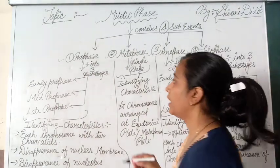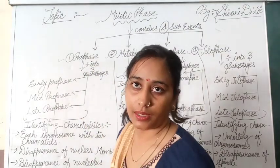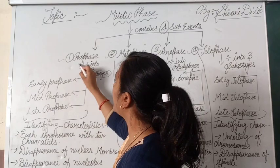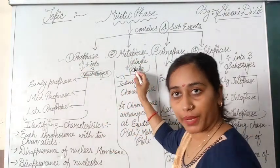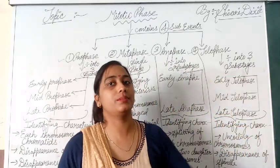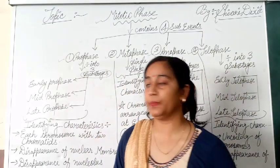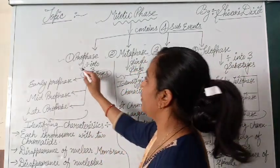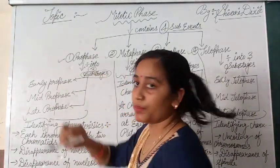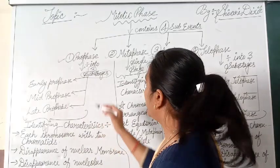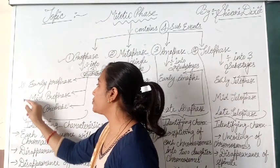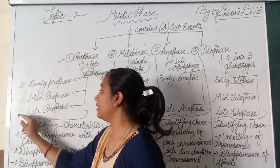Let's understand one by one how many sub-stages each phase has. First, we will come to prophase. Prophase contains 3 sub-stages. These 3 sub-stages are: early prophase, mid-prophase, and late prophase.